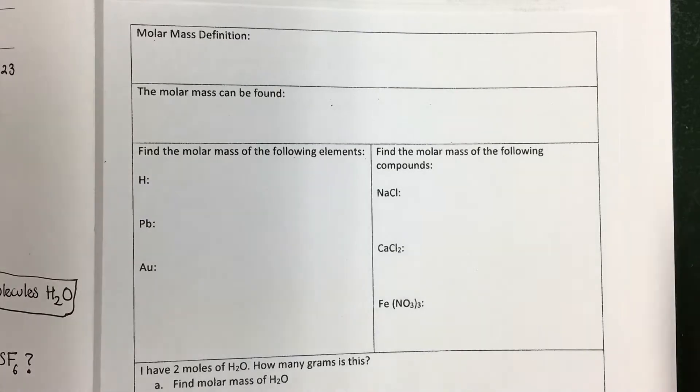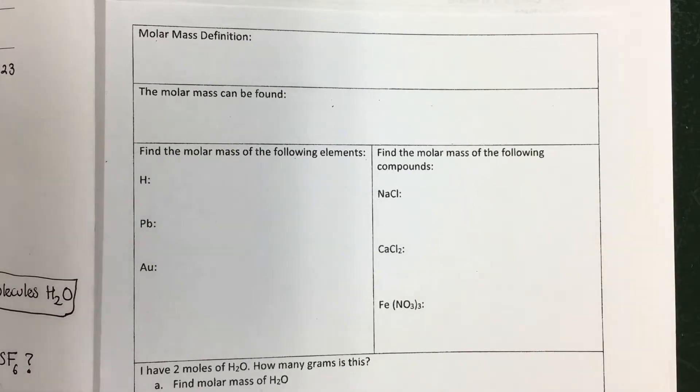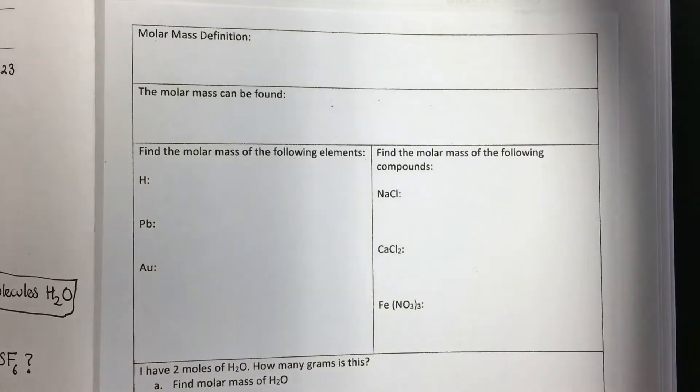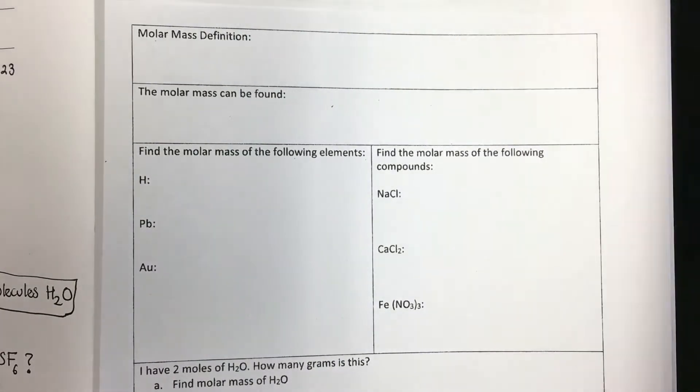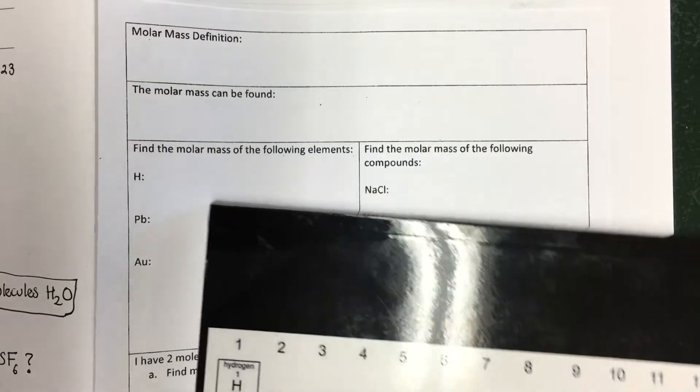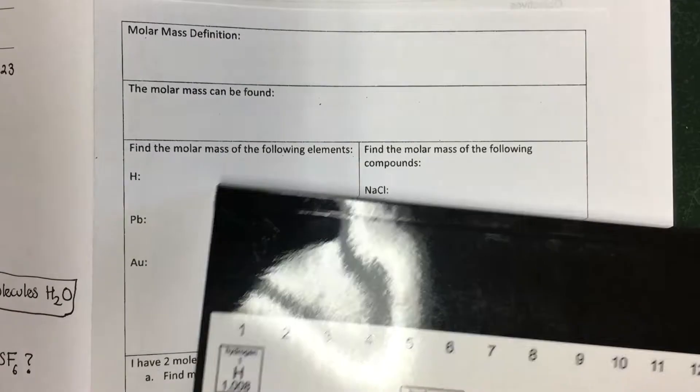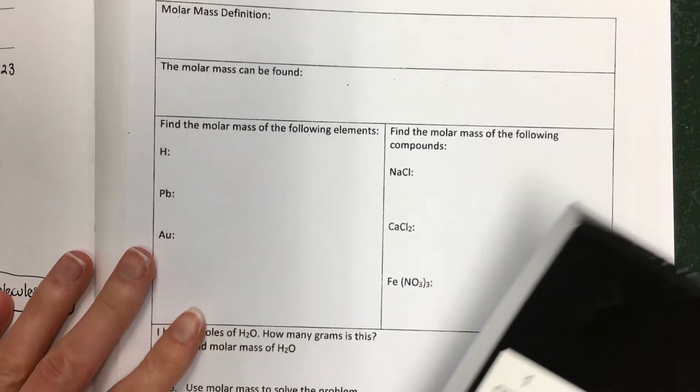This is not as uncommon as it might seem. There are lots of things that we count by weight. Let's say you go buy a box that says it has a thousand paperclips in it. They probably didn't actually count out a thousand paperclips. They probably just figured out how much a thousand paperclips weighs, and then they just weighed out a thousand paperclips.